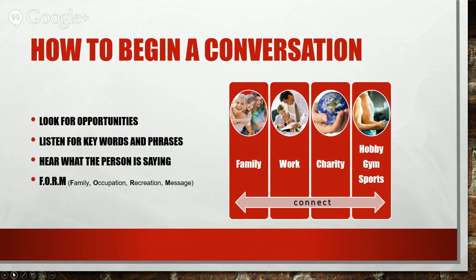When talking to somebody, they should be talking 80% of the time — you should be listening and only talking 20% of the time. When you do talk, ask questions centered around FORM: Family, Occupation, Recreation, and Message. Ask about their family, how many kids they have, what they do for a living, what they enjoy outside of work, and then share your message of what AdvoCare can do to help them.